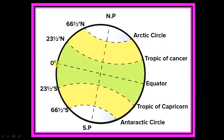Before starting this chapter, we should learn a few lines. This line divides the earth into two equal halves. This line is known as the equator. The upper side of the equator, this half circle, is known as the northern hemisphere. The lower side of the equator, this half circle, is known as the southern hemisphere.